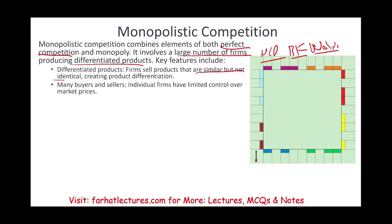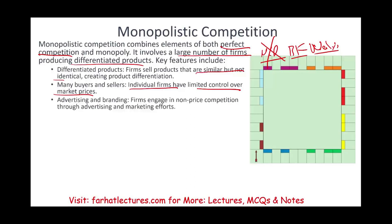Individual firms have limited control over their market price because there are many buyers and sellers. If McDonald's increased their prices a lot, they would lose customers. As long as they keep their prices close to Burger King, and Burger King keeps prices close to Wendy's, they can coexist. They rely heavily on advertising and branding — firms engage in non-price competition through advertising and marketing efforts to differentiate themselves. The barrier to entry is relatively low, not like a monopoly where it's prohibitive, but competition is still tough.